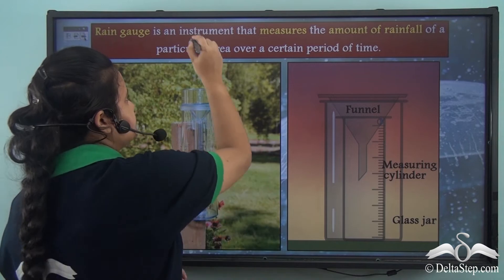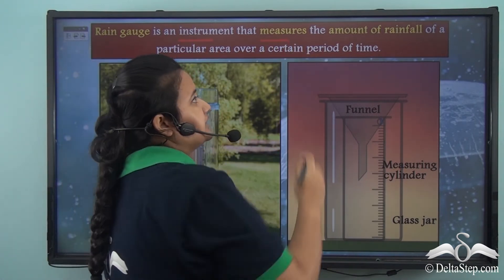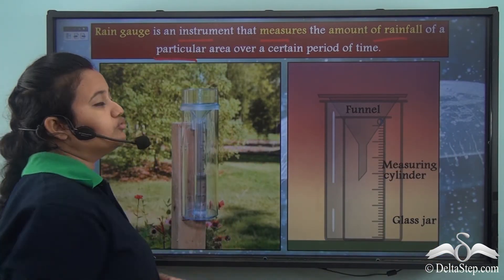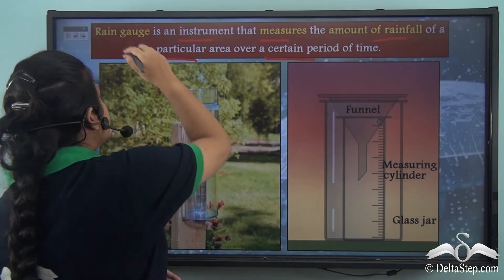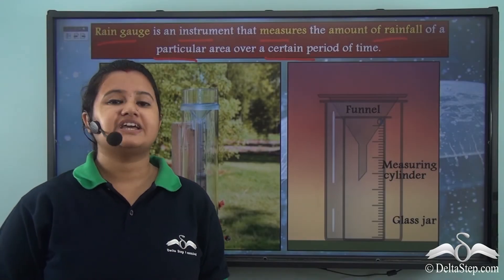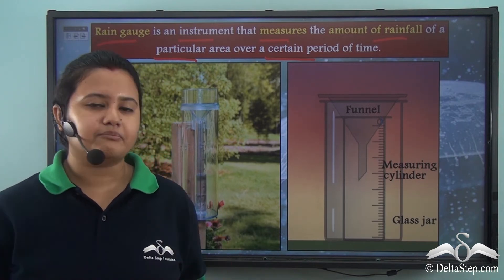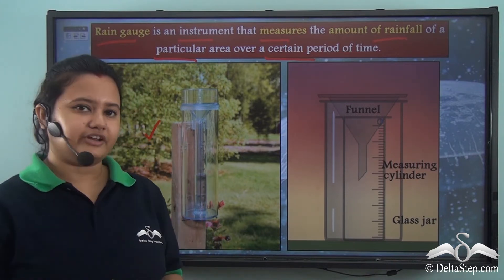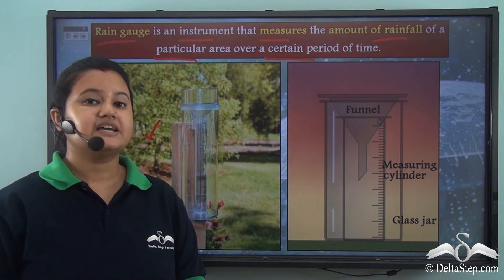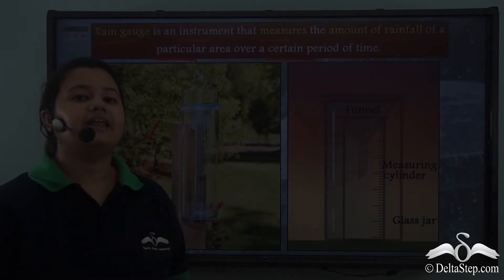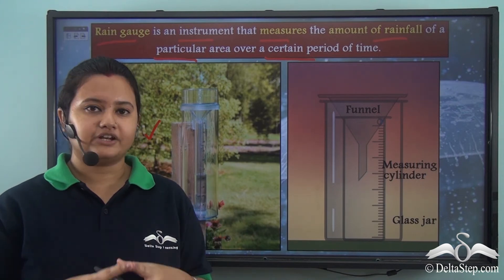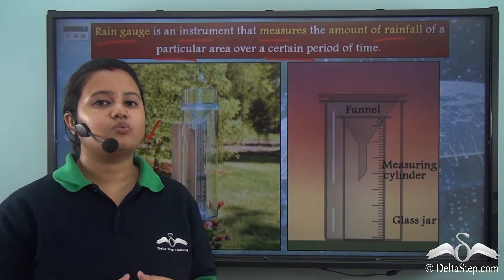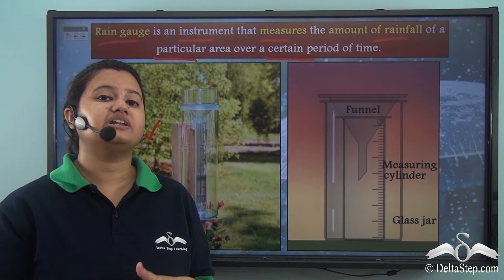How do we measure the amount of rainfall received by a place? The instrument used by meteorologists to measure the amount of liquid precipitation over a certain period of time is known as a rain gauge. In this picture we can see the rain gauge placed in an open ground — this is the correct way to place it, because if it is kept close to a tree or building it will receive extra water drops and give an incorrect reading.